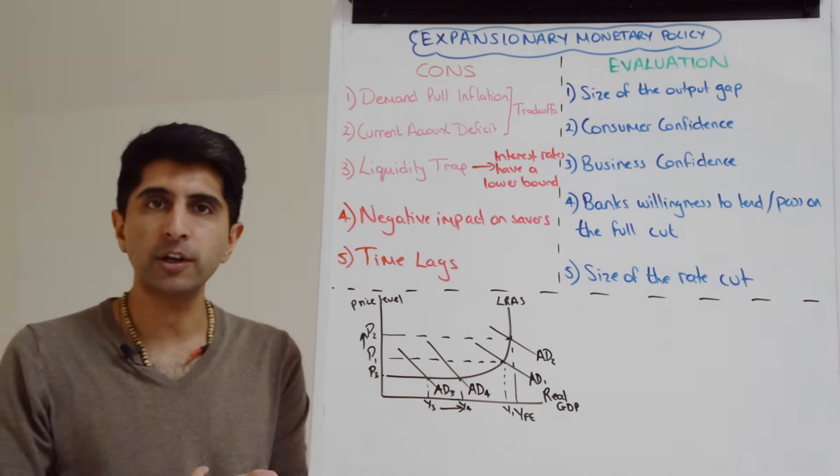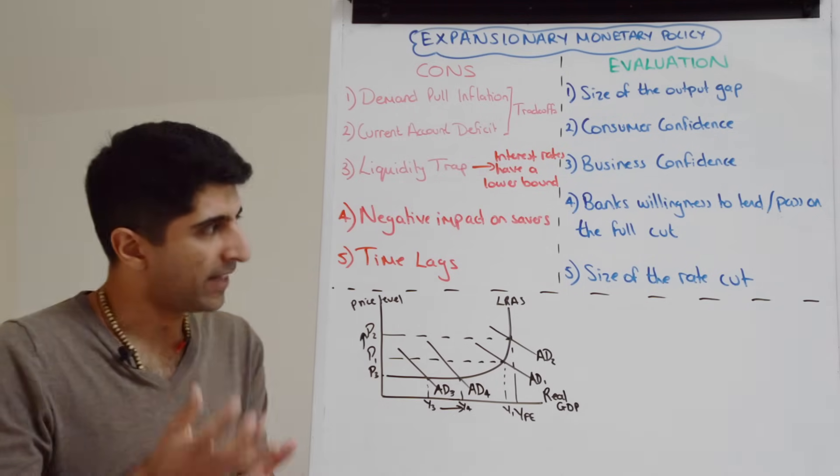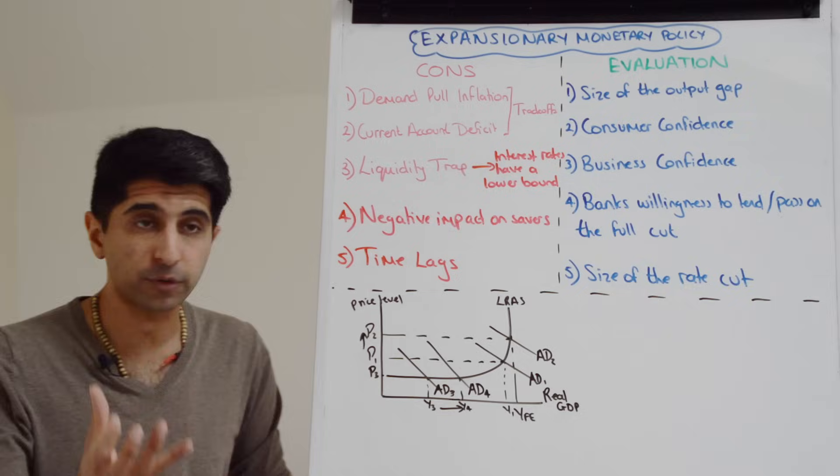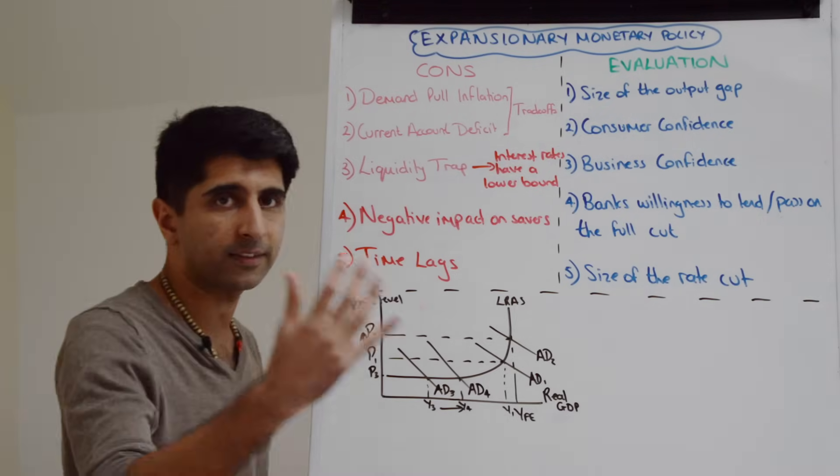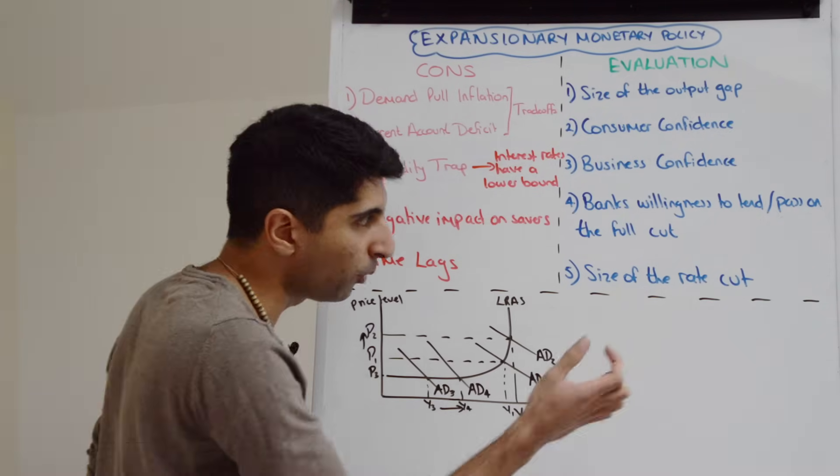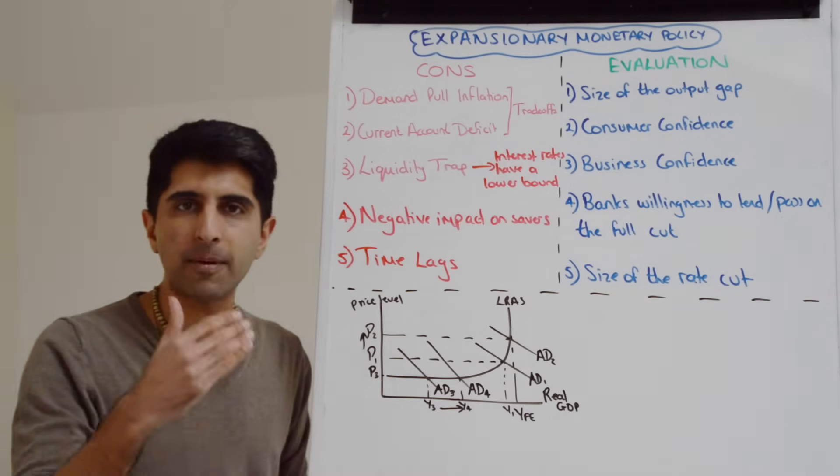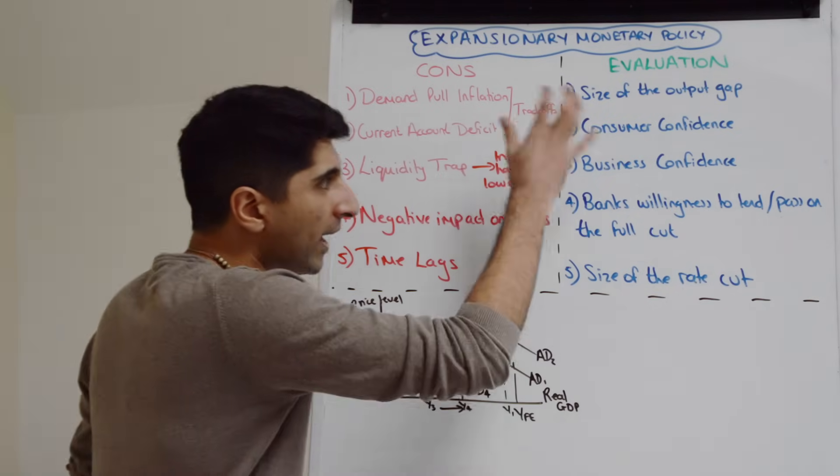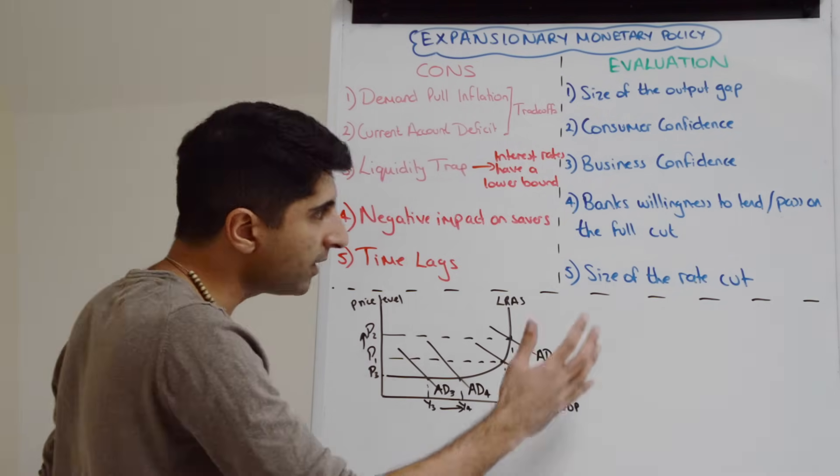But also it means that the disposable income that mortgage payers will have, tracker rate mortgage payers and variable rate mortgage payers, the extra disposable income they'll have will be much more significant, which can then boost consumption and boost AD. Whereas a very small rate cut will not necessarily have a big impact in boosting aggregate demand.